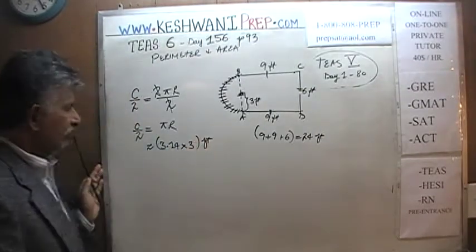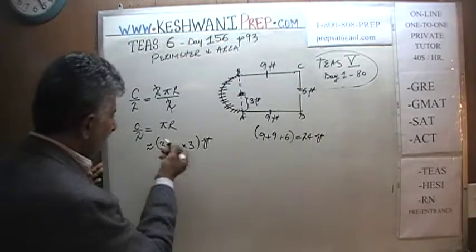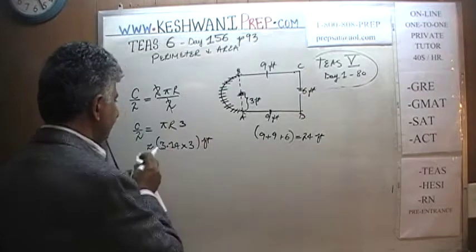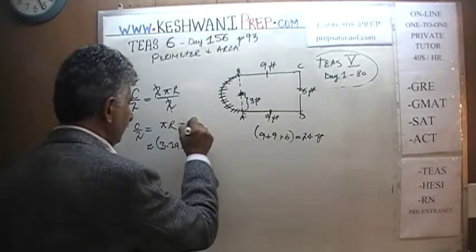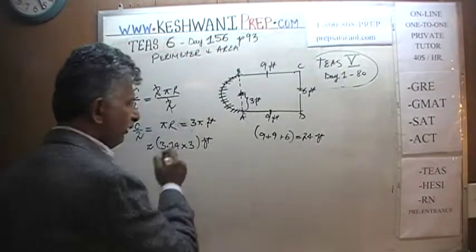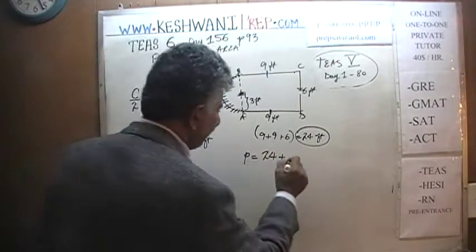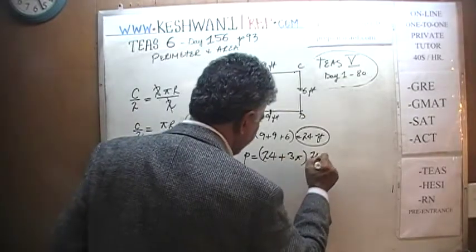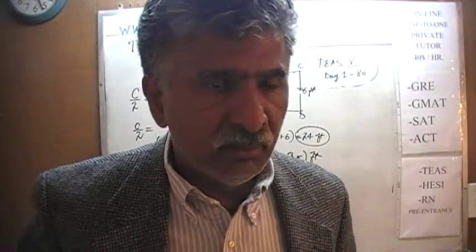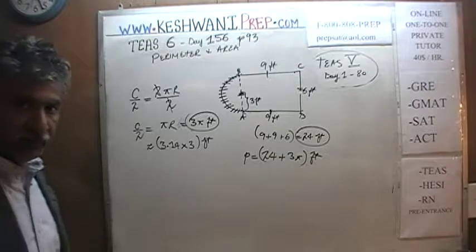That's the circumference of half the circle. We have a couple of choices — we can multiply 3.14 by 3 or leave it as 3π feet. So the total perimeter is simply 24 feet plus 3π feet, and there is nothing wrong with leaving it like that. But if the exam answers are numerical, you'll need to plug in 3.14 for pi.